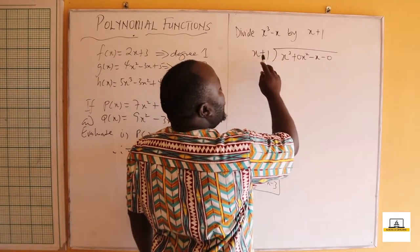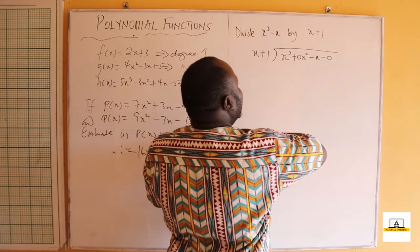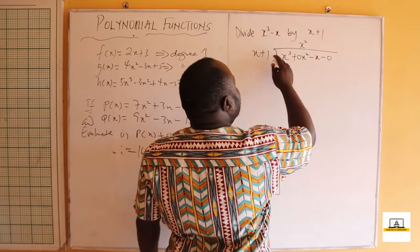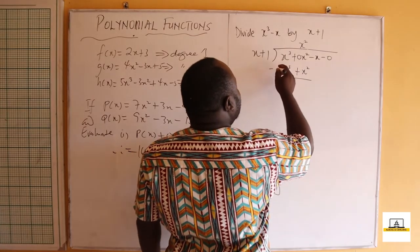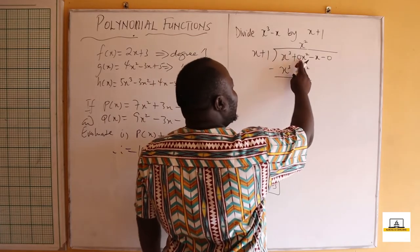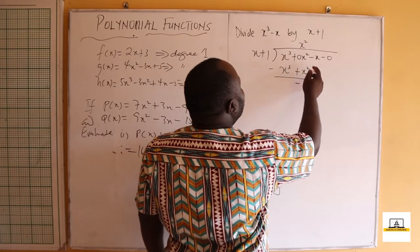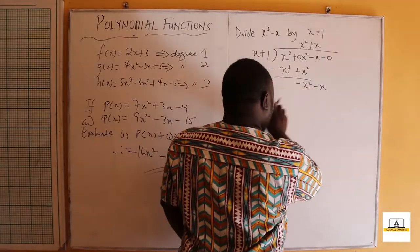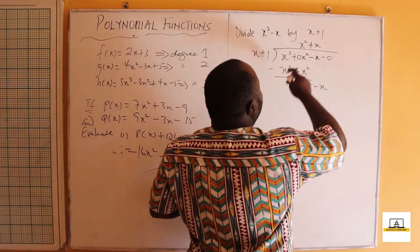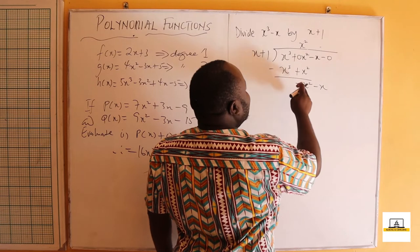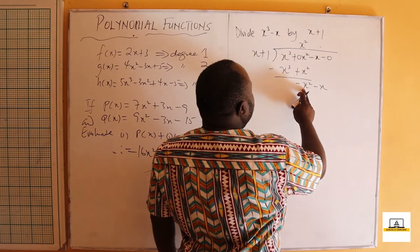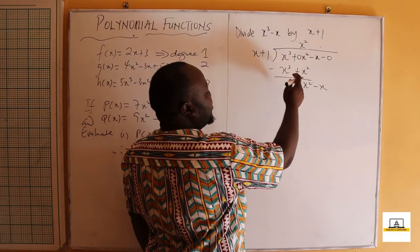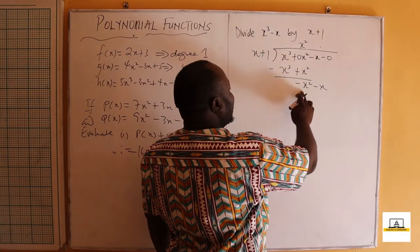We divide: x divided into x³ gives x². Then x² times x = x³ and x² times 1 = x². Subtracting gives 0 for the x³ terms, and 0x² - x² = -x². Bring down -x. Now x into -x² gives -x. Then -x times x = -x² and -x times 1 = -x.